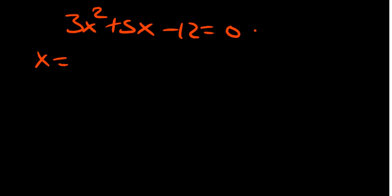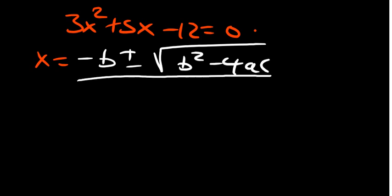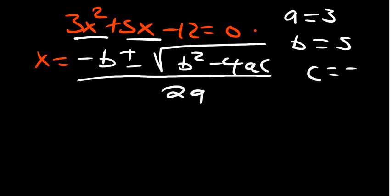Let's look at another practice question. Let's say we have 3x squared plus 5x minus 12 being equal to 0. So the formula is x equals the negative of b plus or minus the root of b squared minus 4ac divided by 2a. So what is important is to identify what is your a. Our a in this case is the coefficient of x squared, which is 3. Our b is the coefficient of x, which is 5. And our c is a constant, minus 12.